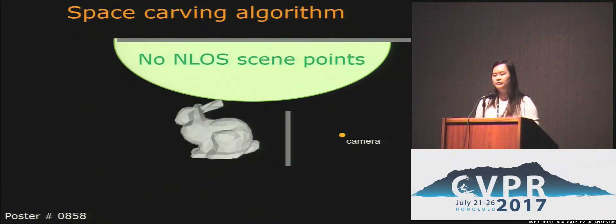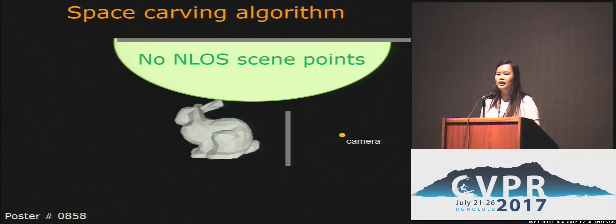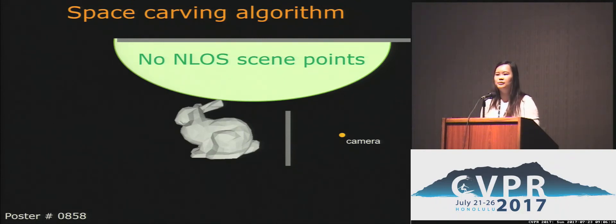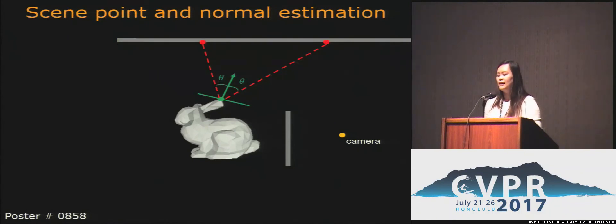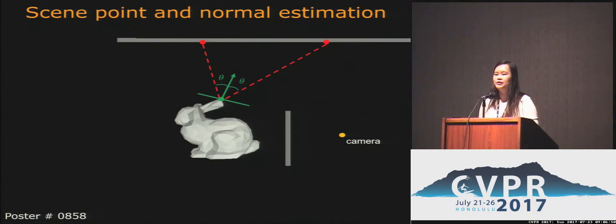Specifically, a direct way to use this is to carve out an ellipsoid where there cannot possibly be any hidden scene. That's because if there were a scene inside the ellipsoid, it would cause a contradiction. Moreover, the first photon will follow the mirror direction even if the scene is diffuse. In the paper, we show how to estimate the 3D location and surface normal of the hidden scene.